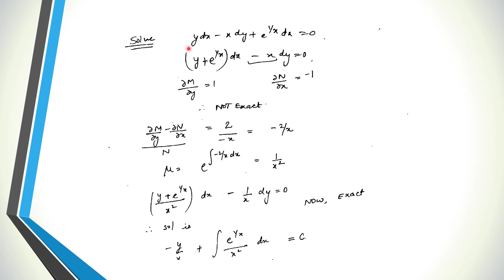Now let's see one example. Suppose we are given a differential equation to solve. First, we group the dx terms and the dy terms to identify M and N. We find the partial derivative of M with respect to y, which is 1, and the partial derivative of N with respect to x, which is −1. Since they are not equal, the equation is not exact, so we need to find the integrating factor.